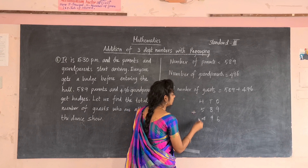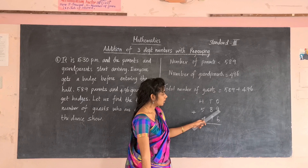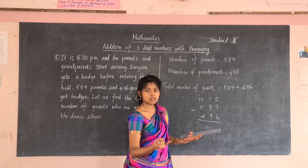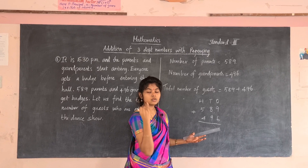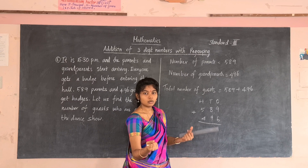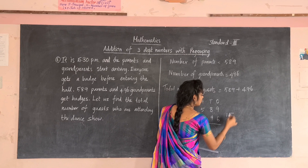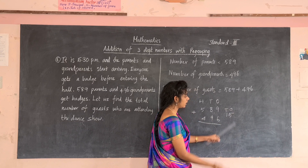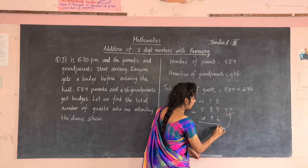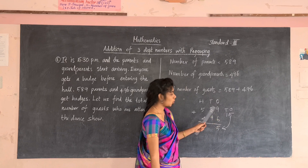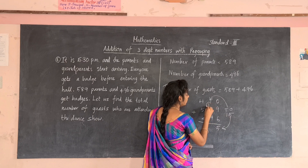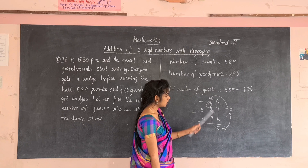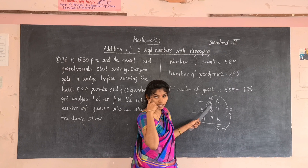Now add the numbers. In the ones place: keep nine in your mind, take six in the fingers. Say the number after nine — ten, eleven, twelve, thirteen, fourteen, fifteen. So the ones addition gives fifteen. Because it is a two-digit number, we write fifteen outside. The ones place digit five is written in the ones place, and the tens digit one is carried over to the tens place.